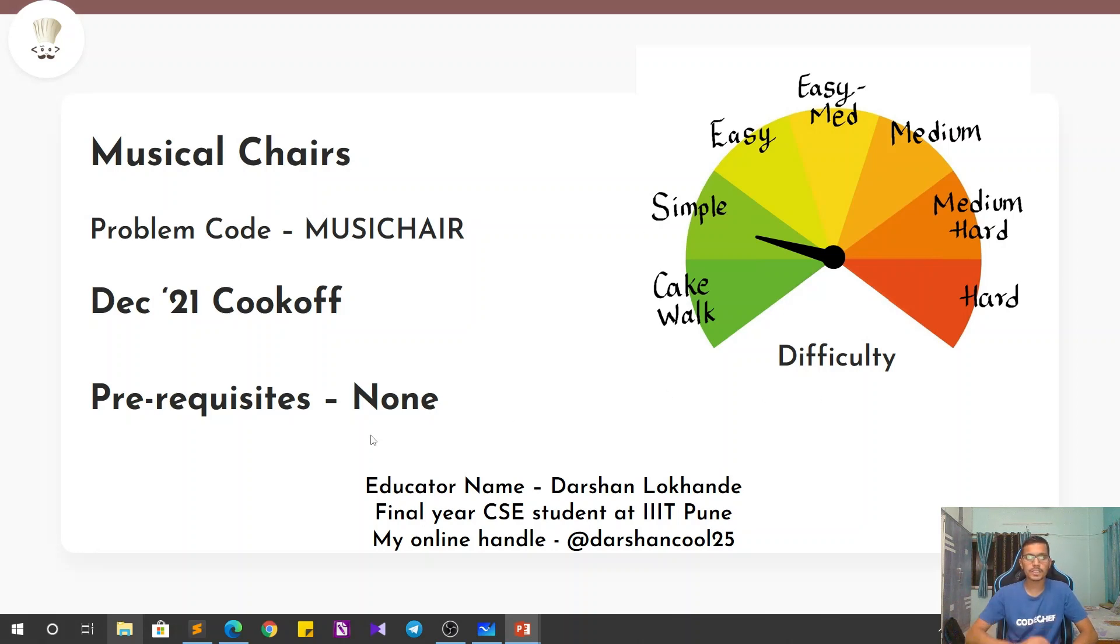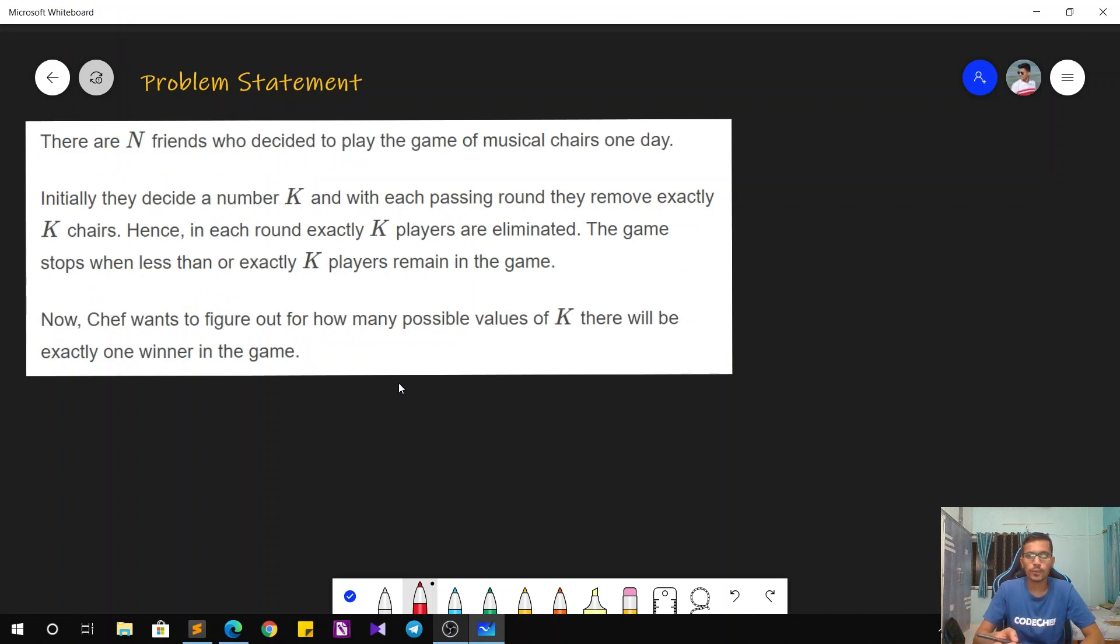There are no prerequisites to solve this problem. The problem statement goes as follows: there are N friends who have decided to play the game of musical chairs. They have decided a number K initially, and with each passing round of the game they remove exactly K chairs.